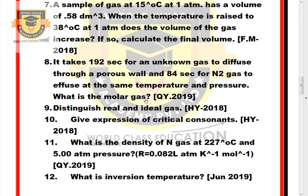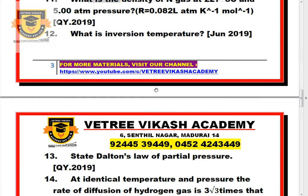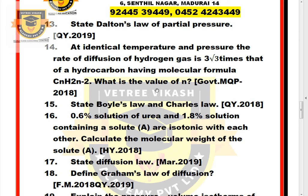Question 12: What is inversion temperature? Question 13: State Dalton's law of partial pressure. Question 14: At identical temperature and pressure, the rate of diffusion of hydrogen gas is 3√3 times that of a hydrocarbon having molecular formula CₙH₂ₙ₋₂. What is the value of n? Question 15: State Boyle's law and Charles' law. Question 16: 0.6% solution of urea and 1.8% solution containing a solute are isotonic with each other. Calculate the molecular weight of the solute. Question 17: State the Diffusion law. Question 18: Define Graham's law of diffusion.